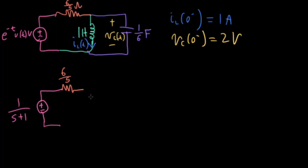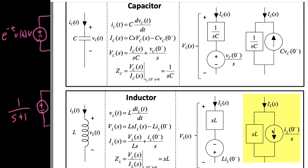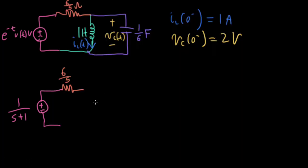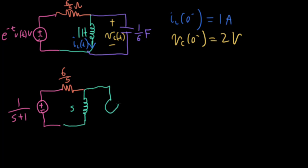At this point we need to decide what models to use for the inductor and the capacitor. I'm going to work this two different ways — starting with the parallel models. The parallel model for the inductor has a current source going downward along with the main current flow, and that current source is like a unit step in the time domain. I'll draw this as an inductance of SL, so S times 1, with a current arrow going downward equal to I_L pre-initial over S — in this case just 1/S.